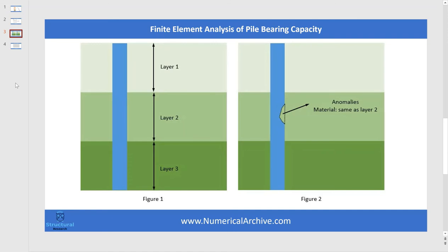capacity of an intact pile with a pile that includes anomaly. In this picture you could see an example of this anomaly that usually occurs during the execution of concrete piles. Also, you should consider that the material of this